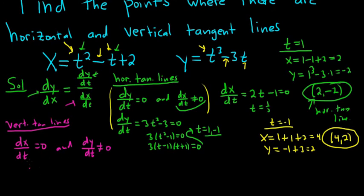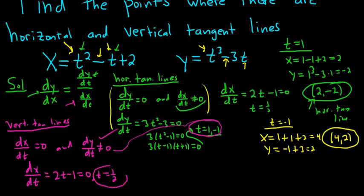So dx/dt, let's work it out. dx/dt is equal to 2t - 1. Setting that equal to 0, we get t = 1/2. And then dy/dt, the only time dy/dt equals 0, we already did it. It's the values of 1 and -1. So it's not going to be equal to 0 at 1/2. So this is satisfied. So all we have to do now is take this t value and plug it into x and y to get our point.